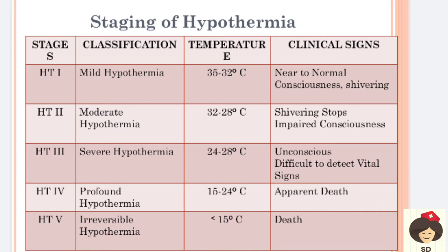Coming to the staging of hypothermia. Stage one is mild hypothermia - temperature between 35 to 32 degrees Celsius. The patient will be conscious and will put on shivering. If not treated, the patient can go for stage two - moderate hypothermia, where temperature is 32 to 28 degrees Celsius. Shivering will stop because if shivering continues for a long time, the muscles lose their function, get exhausted, and cannot do shivering.